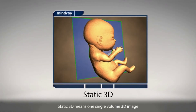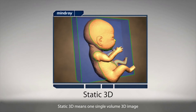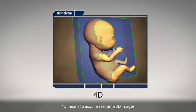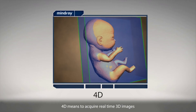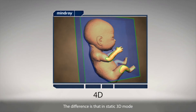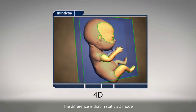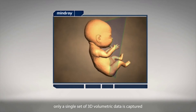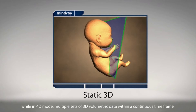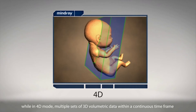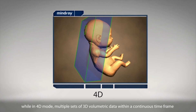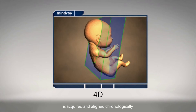Static 3D means one single volume 3D image. 4D means acquiring real-time 3D images. The difference is that in static 3D mode, only a single set of 3D volumetric data is captured, while in 4D mode, multiple sets of 3D volumetric data within a continuous timeframe are acquired and aligned chronologically.